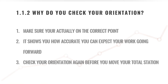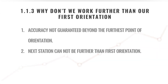Why shouldn't you work further than your first — or furthest — orientation? You can only guarantee accuracy up to your furthest point coming closer. If you orientate to the closest point and make a 10mm mistake, over 100 meters that error can become a physical 100mm — a 10 centimeter error. So we always start with the furthest point to give ourselves the best possible opportunity to work as accurately as possible.